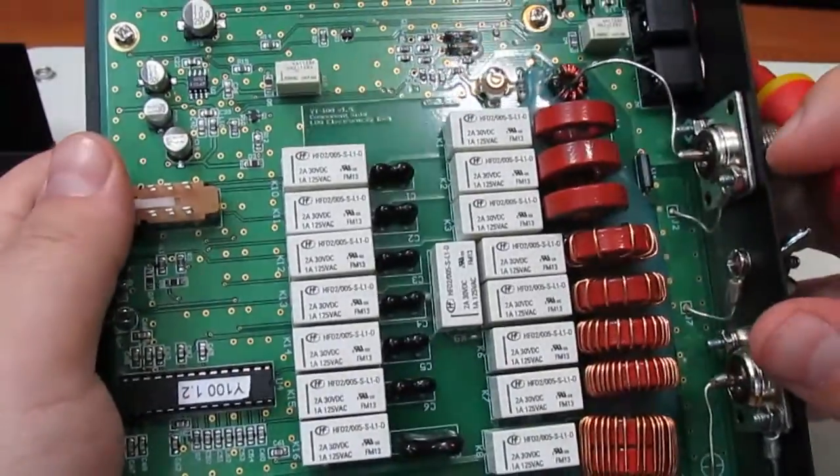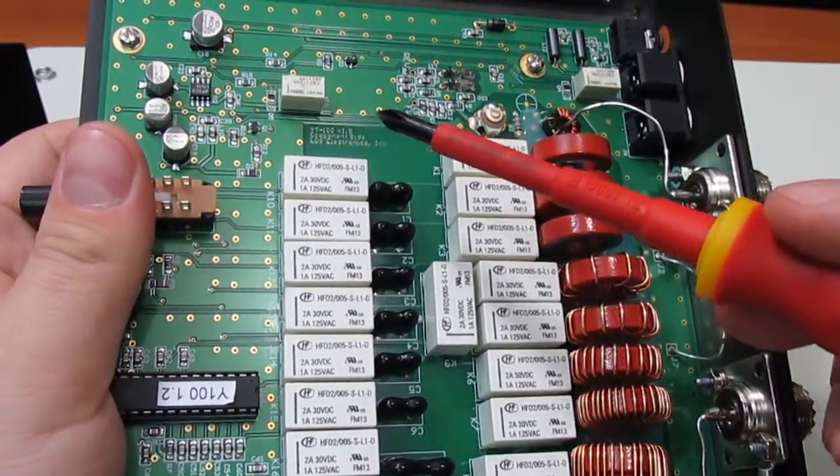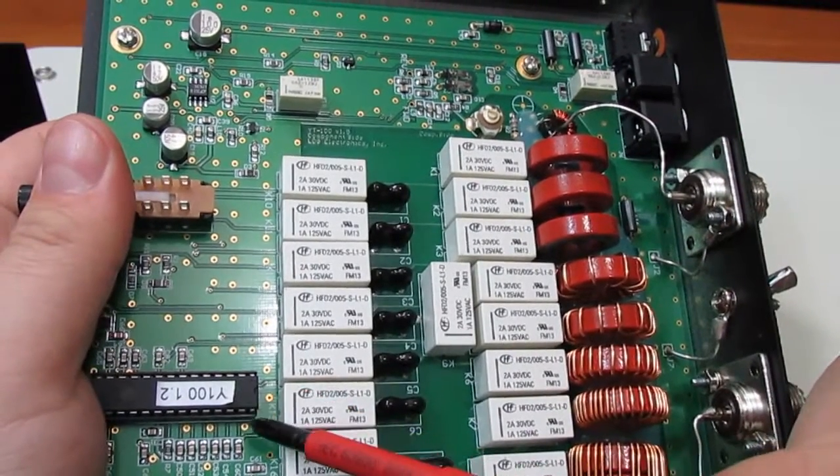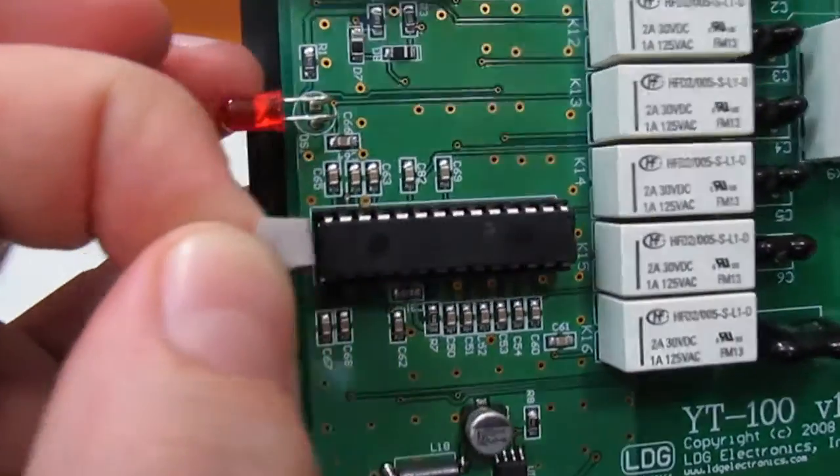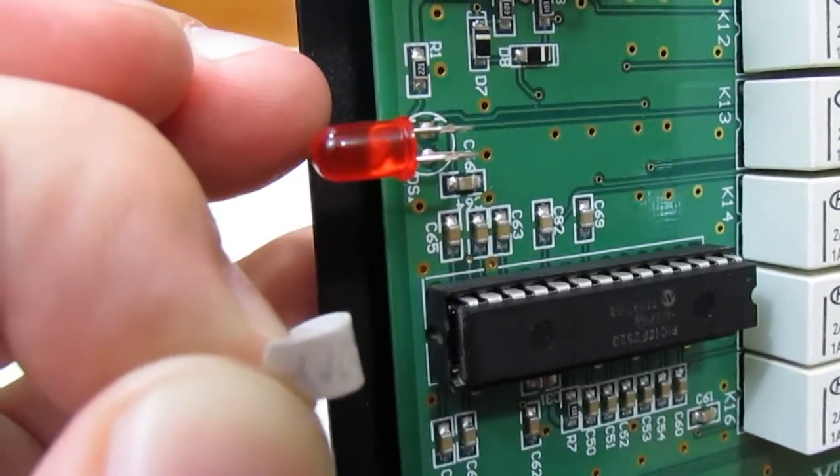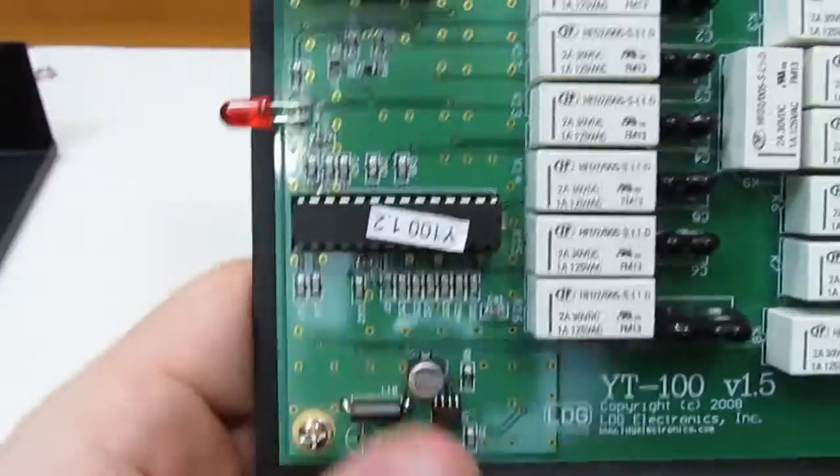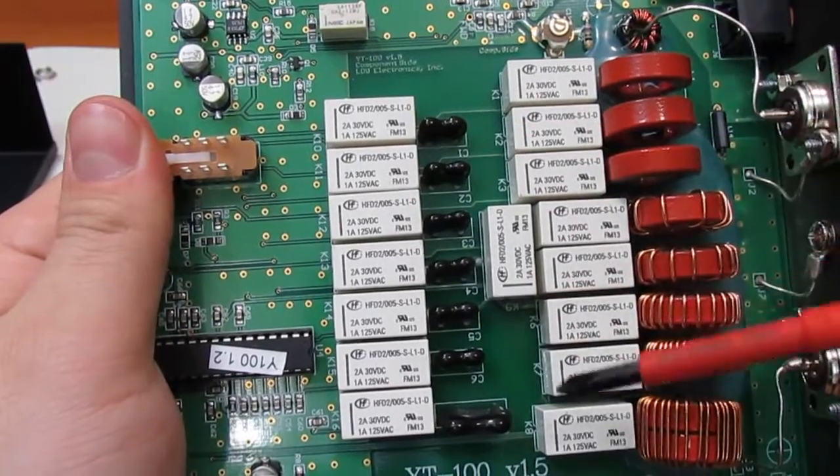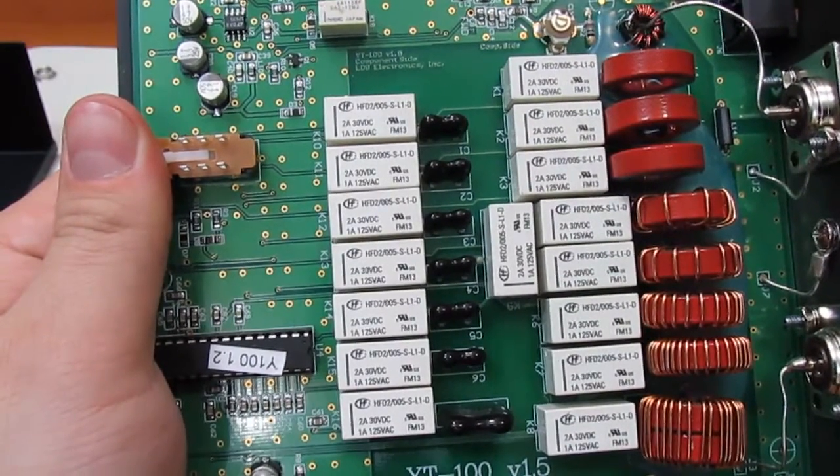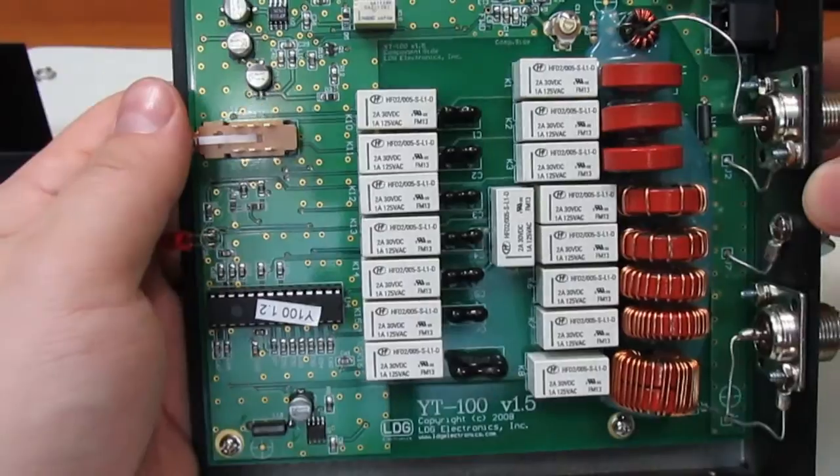Now how an antenna tuner like this works is pretty simple. You have a little SWR bridge up here that determines the SWR. And then this microprocessor down here is probably a PIC microcontroller. It's a PIC. This microprocessor switches through your inductors and your capacitors and basically tries to achieve the lowest SWR. It basically works by trial and error. It really just tries all combinations and sees what happens.